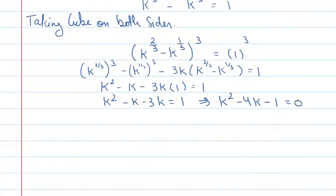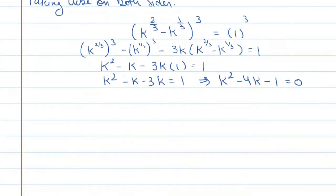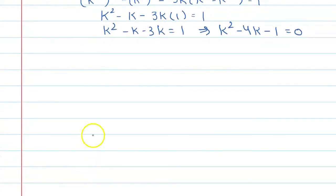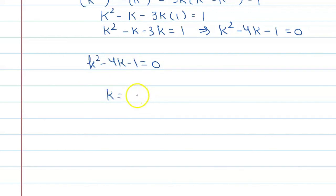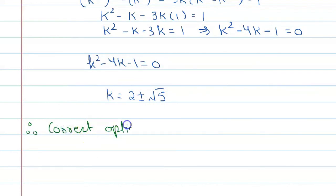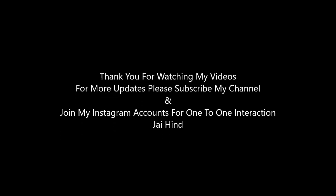Now you have a new quadratic equation in the variable k: k squared minus 4k minus 1 equal to 0. Solve this and we will get k equal to 2 plus minus root 5. यहाँ अपना final answer लिख लेते हैं. Therefore, correct option is A. Thank you.